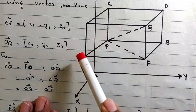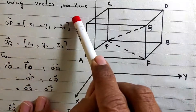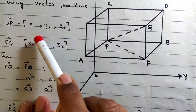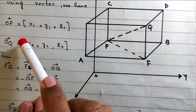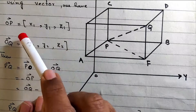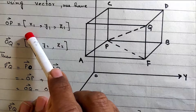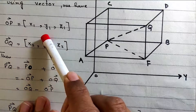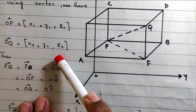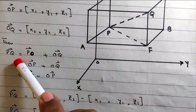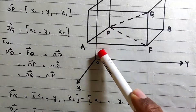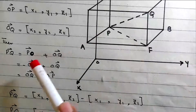We have using vectors: vector OP equals x1, y1, z1 and vector OQ equals x2, y2, z2. So OP is equal to x1 i plus y1 j plus z1 k.